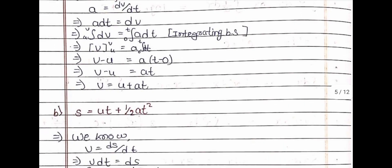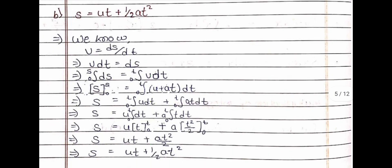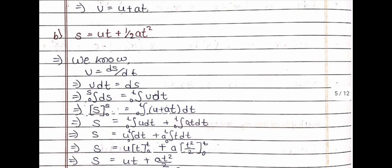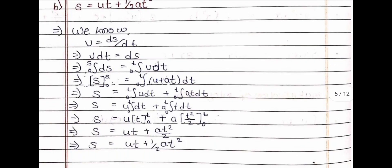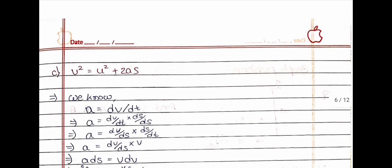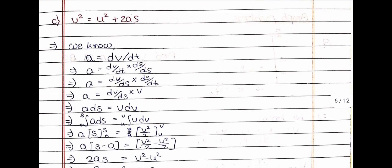The second equation is s = ut + ½at², and the proof of this equation is given here. The last formula is v² = u² + 2as, and the proof of this formula is also given here.